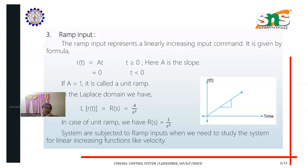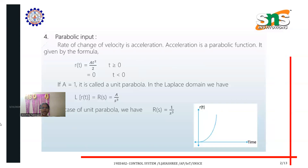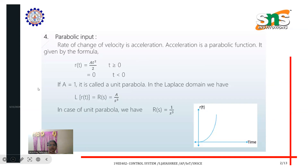The next type of input is parabolic input. The parabolic signal has a curve-type nature. The rate of change of velocity is acceleration, which is a parabolic function. It is given by the formula r(t) = a·t²/2.